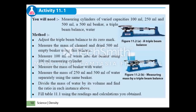Now let's do an activity to find the relationship between mass and volume — Activity 11.1. In order to do this activity we need measuring cylinders of different capacities: 100 millilitres, 250 millilitres, and 500 millilitres capacity. We also need a 500 millilitres beaker, a triple beam balance, which is an instrument used to measure mass precisely, and water. The first step is to adjust the triple beam balance to its zero mark before we do any measurement.